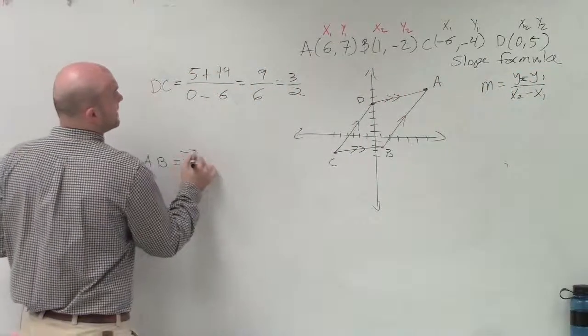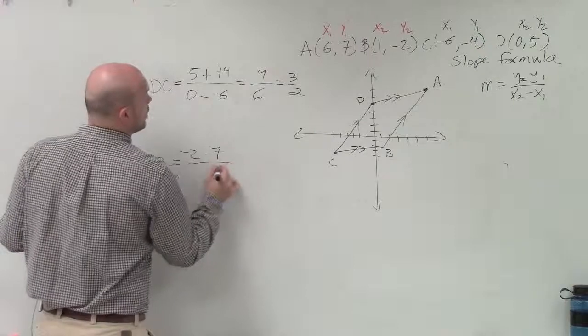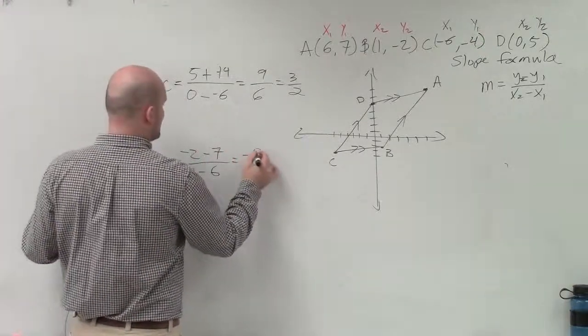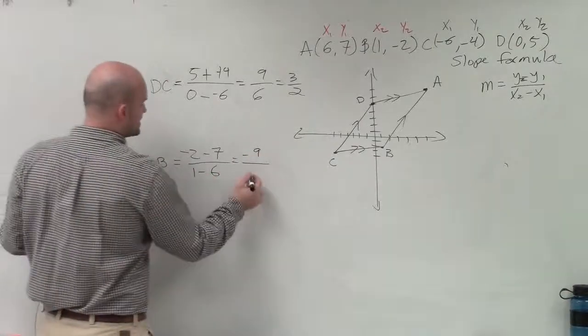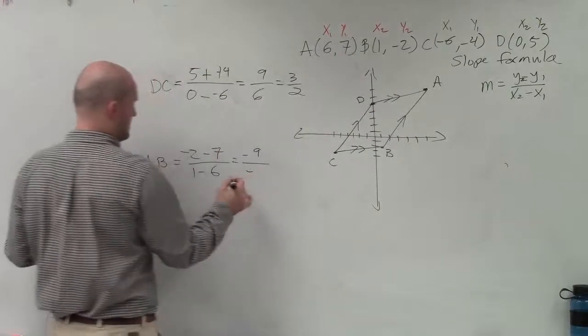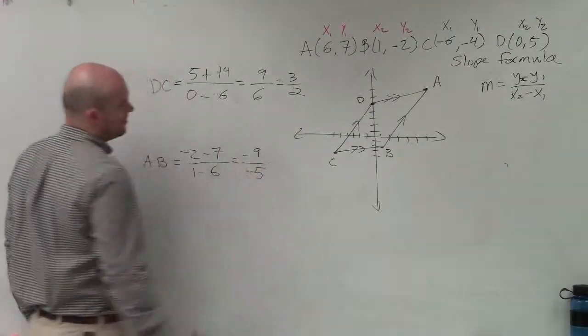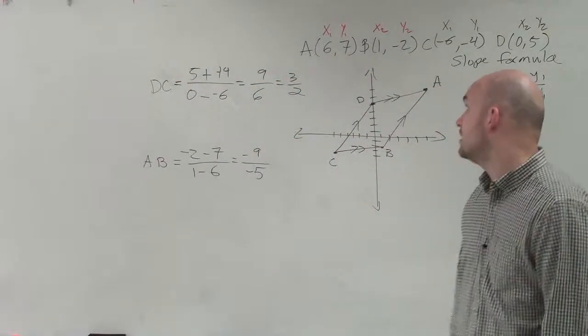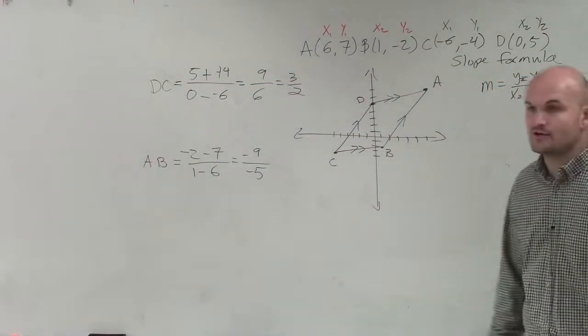So here I have negative 2 minus 7 over 1 minus 6. Negative 2 minus 7, that becomes negative 9. 1 minus 6, 1 minus 6 is negative 5. Well, that cannot be reduced at all.